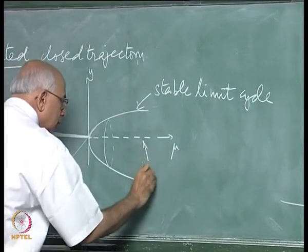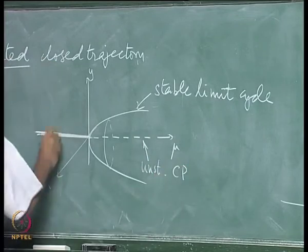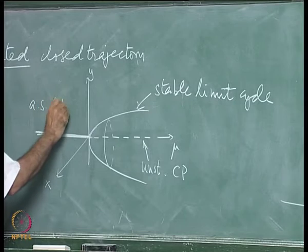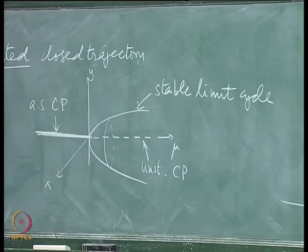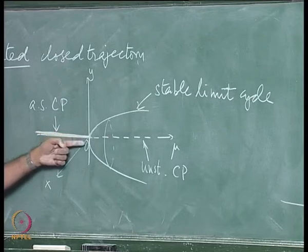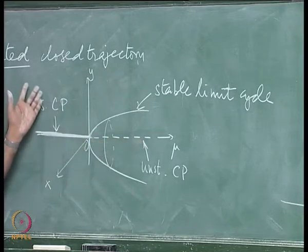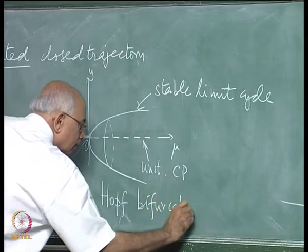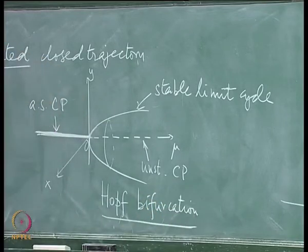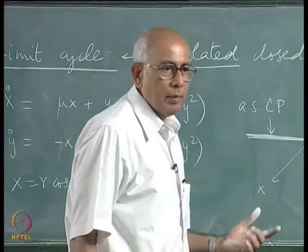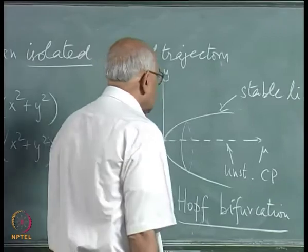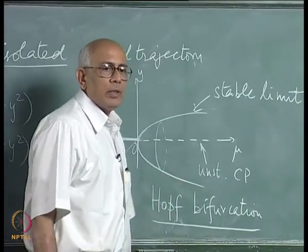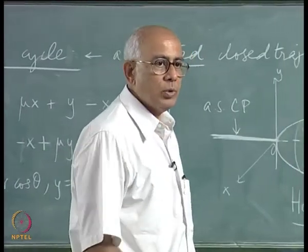The bifurcation at mu equal to 0, in which a stable critical point bifurcates into an unstable critical point and a stable limit cycle, is called a Hopf bifurcation. It is one of the most important bifurcations in nonlinear dynamics. It is the standard mechanism by which periodic behavior suddenly emerges as you change a bifurcation parameter, and we will see examples of this in chemical and biological systems.